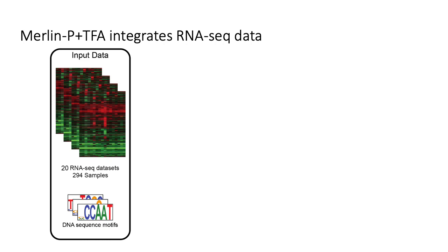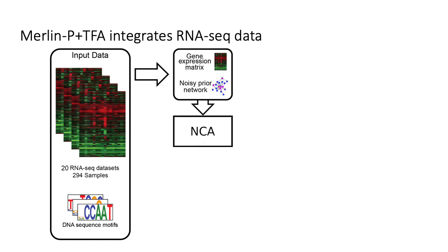To infer the network, we use the MERLIN-P plus TFA framework. First, 20 bulk RNA-seq datasets pertaining to Aspergillus fumigatus were collected from publicly available sources. Together, this comprised 294 samples from over 60 different conditions. We also collected 632 DNA sequence binding motifs pertaining to transcription factor binding sites. We use the motifs to construct a prior network. Then, using the gene expression matrix and prior network, we apply network component analysis, or NCA, to the data. The result of this algorithm is a new matrix which we call the transcription factor activity. I'll provide motivation for this step in future slides.